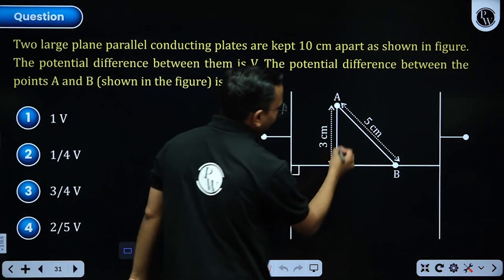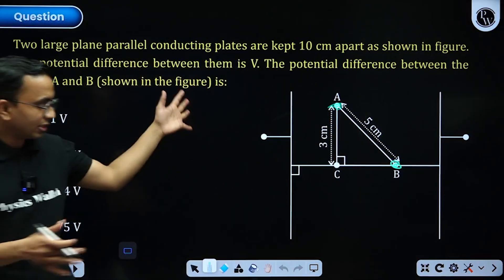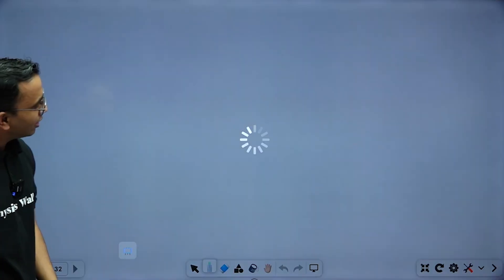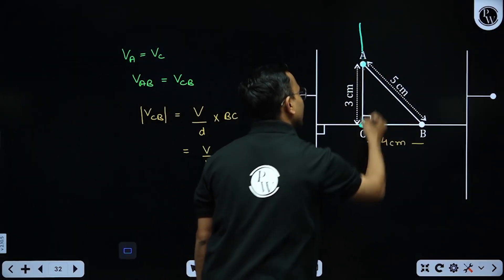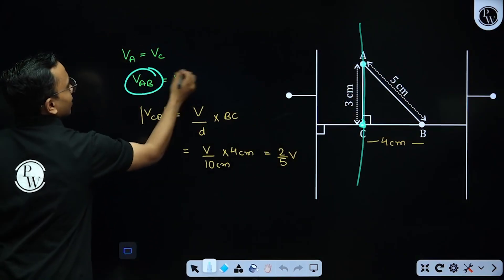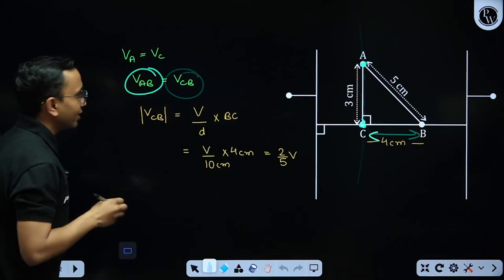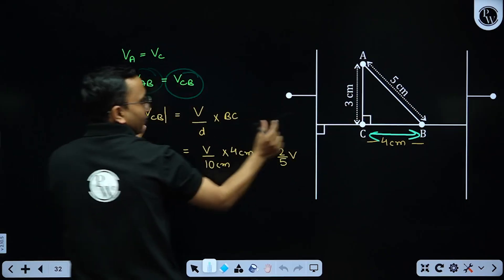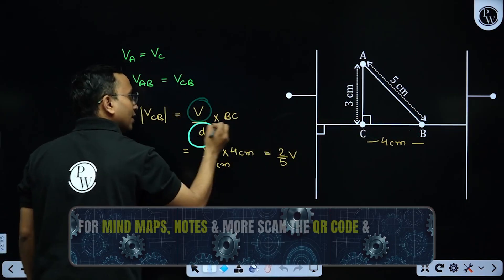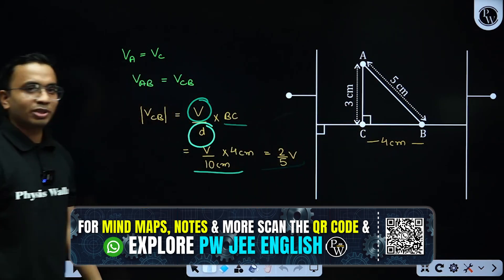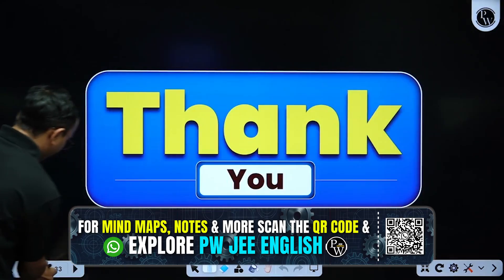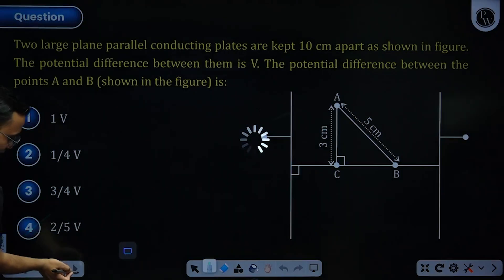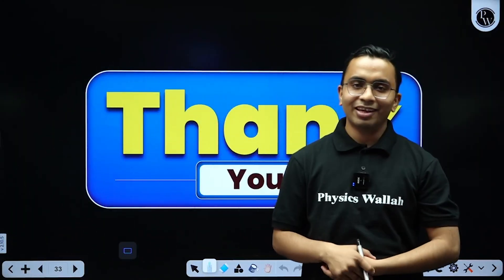Last question: find the potential difference between A and B in a parallel plate capacitor with uniform electric field. Points A and C lie on the same equipotential surface, so V_A = V_C, meaning V_AB = V_CB. The potential difference between B and C equals (total voltage / total plate separation) × length BC. Substituting values gives the answer as 2/5 V, which is option 4. Thank you all — we will meet in the next 15×15 series.